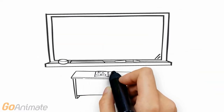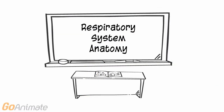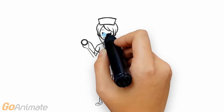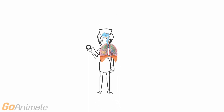Let's learn about respiratory system anatomy. The respiratory system takes in oxygen for our cells and releases carbon dioxide.